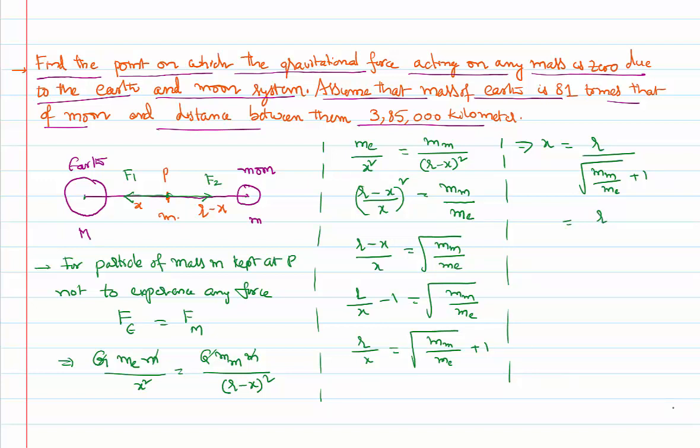Substituting the values, r divided by x equals root of, if you call mass of the moon as m, mass of the earth is 81 times of m, so m by 81m plus 1. So x value is r by square root of 1 by 81 plus 1, that is r by 1 by 9 plus 1, that's r by 10 by 9, that's nothing but equal to 9r by 10.